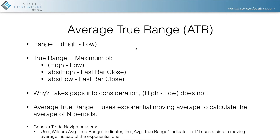Compared to the range, the true range is the maximum of three values: the high minus the low (the range), the absolute value of the high minus the previous bar's close, or the absolute value of the low minus the previous bar's close. It takes whichever is the highest, which accounts for gaps. This is very helpful in markets with a lot of gaps and when you want to assess volatility over a longer period.